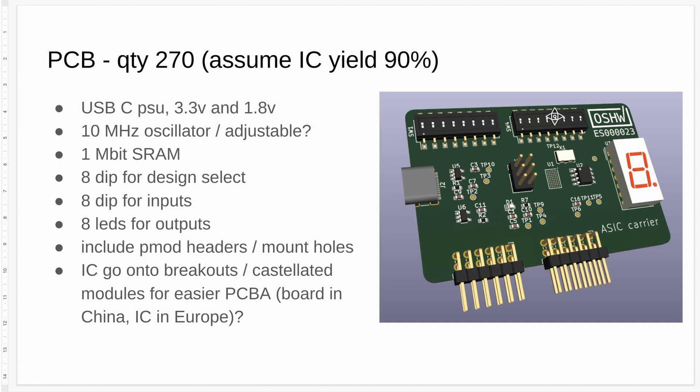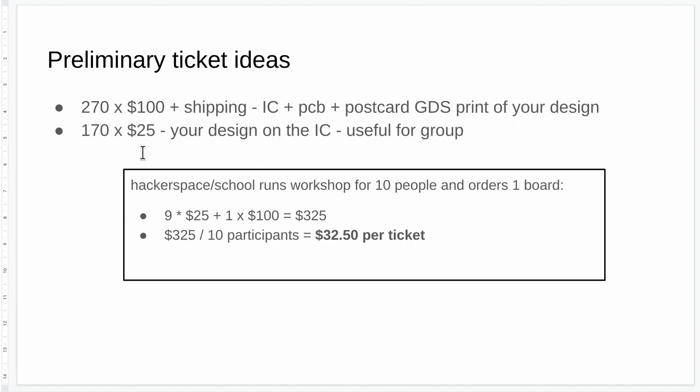The board lets you choose which design should be active, and then you've got your eight ins and eight outs. One way I'm thinking about making this even more affordable: 270 tickets where you get your chip on a board for $100 plus shipping, and 170 tickets where you get your design on but no board. A group of 10 people could buy one expensive ticket and nine cheap tickets, getting it down to $32 per person, and still get the board back to share between the group. I'm looking for collaborators especially on the cloud side — the web page and drag-and-drop stuff, which is completely outside my experience.